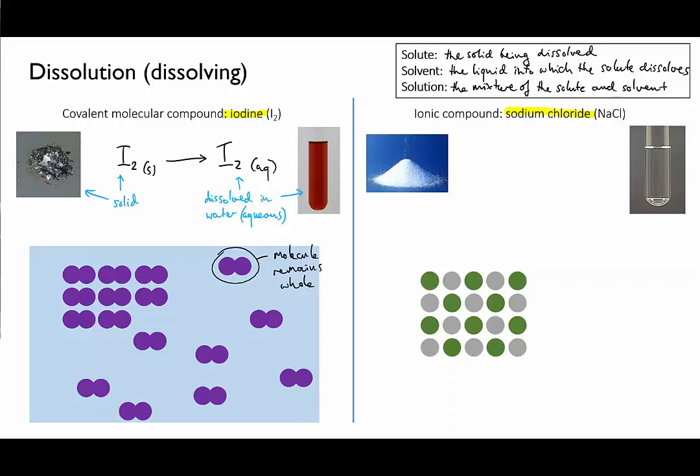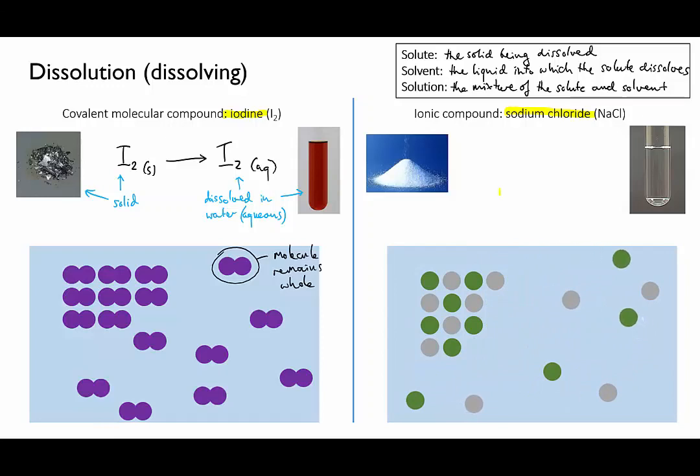Now let's look at the sodium chloride dissolving on a molecular ionic level. When this crystal dissolves, the ionic bonds that hold the ions in the lattice break and the individual ions are able to move freely through the water.